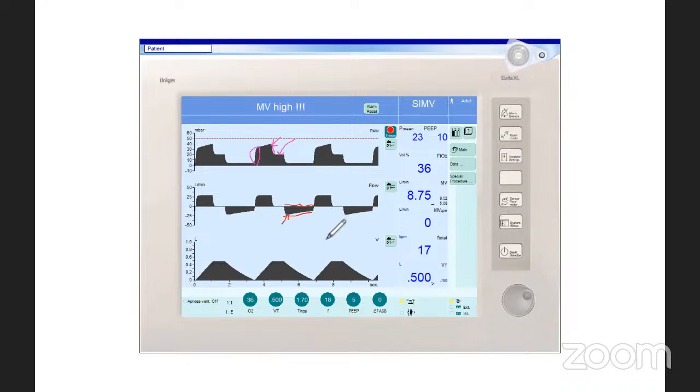So you can see here that there is persistent flow at end of expiration. This indicates that we have auto-PEEP and that's what you see here - the plateau pressure is increased because there's auto-PEEP in the system.